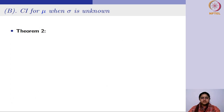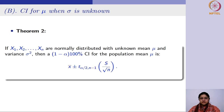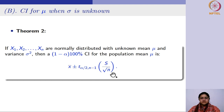We now move on to our next theorem: what will be the confidence interval for μ when σ is unknown. When σ is unknown, the population standard deviation σ is replaced by the sample standard deviation s, and accordingly the t-distribution comes into picture. The 100(1−α)% confidence interval for the population mean μ is then x-bar ± t_{α/2, n−1} · s/√n.